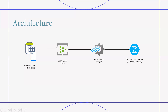Step two: from Event Hubs to Stream Analytics. A Stream Analytics job is started which receives data via the Event Hubs source. When you create a Stream Analytics job, you can select Event Hubs, Blob Storage, or IoT Hubs as input. In this scenario we choose Azure Event Hubs, so when the job starts, it receives data directly from that source.